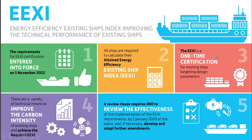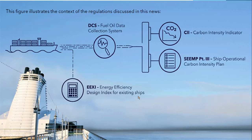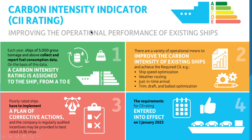EEXI involves modifications or changes done on the ship one time to improve CO2 emission. But CII is the operational performance indicator, which basically reduces CO2 emission by enhancing the performance of the ship on an annual basis. CII is applicable to ships of 5,000 GT and above, and their fuel consumption data will be collected.